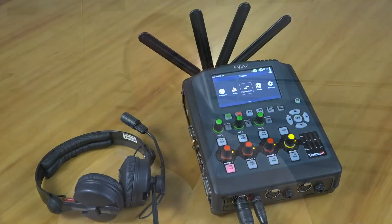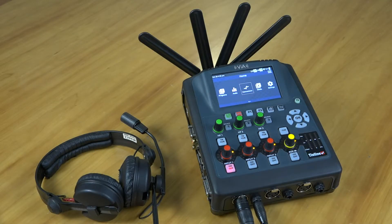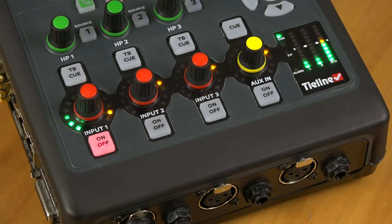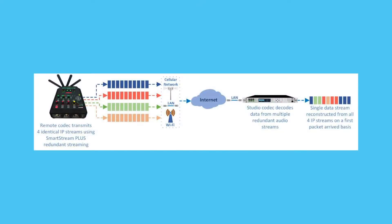Today I'd like to show you how to configure SmartStream Plus redundant streaming on the Tieline codec. Redundant streaming is a great way to reduce the likelihood of audio glitches from lost or late packets over internet connections. This is possible because multiple packet streams can be sent simultaneously over different network interfaces to ensure rock-solid streaming.